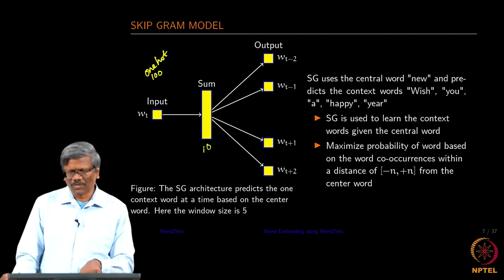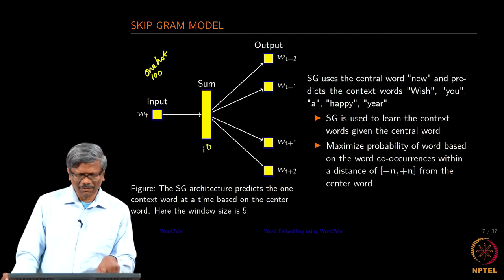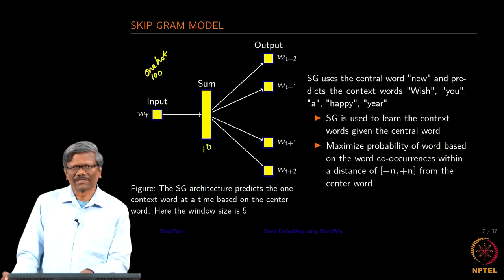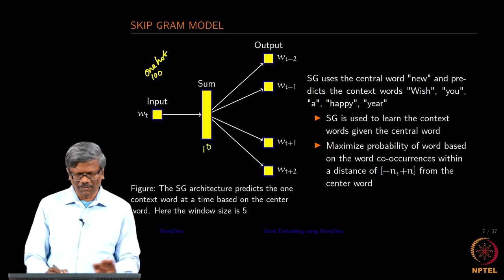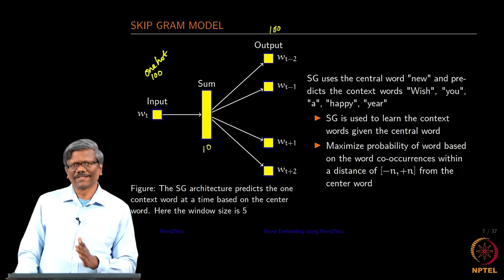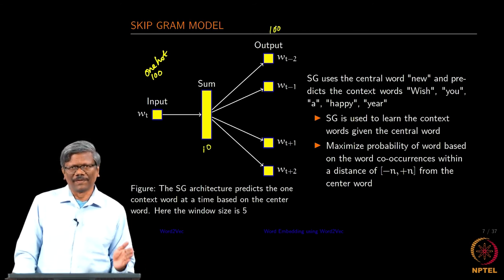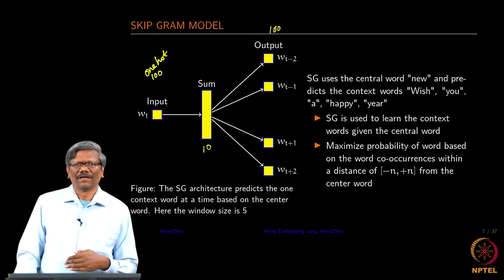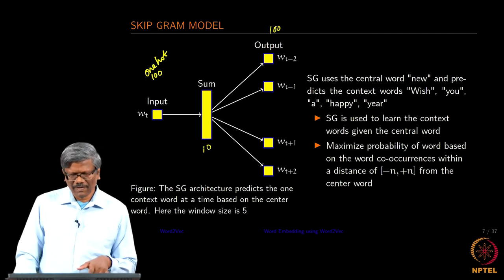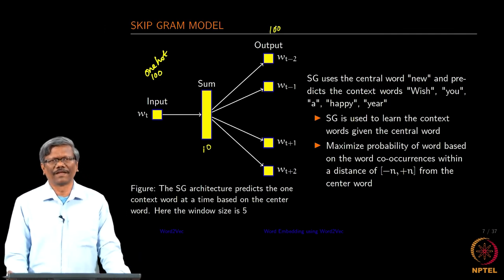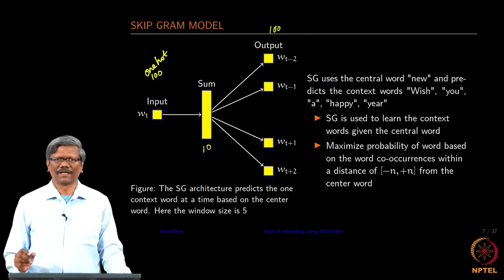The output would also be of the same size as the input. Even though we have multiple context words, we will be computing the context word one at a time, and the size of the output would also be 100, with 100 neurons. Again, we will be applying a softmax so that the values are distributed across all 100 elements, and we try to maximize the probability of obtaining the right word. Or we will formulate an error function and try to minimize it using back propagation, so that the error is minimized after a certain number of epochs.